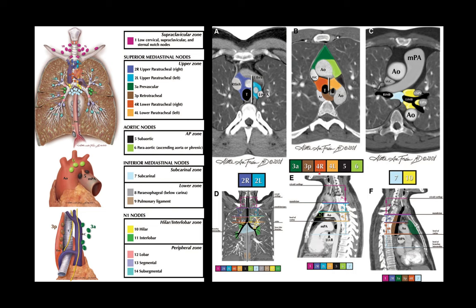It's really important to know the lymph node stations in the chest, specifically whether something is in the right side of the mediastinum or the left side of the mediastinum, and what distinguishes the mediastinum from the hilum.